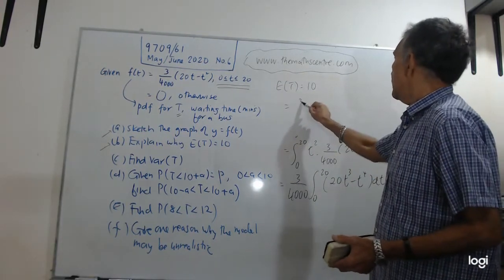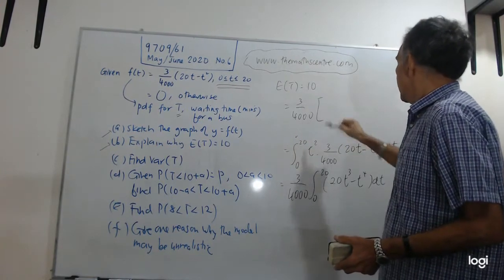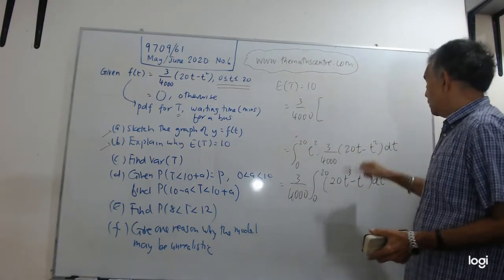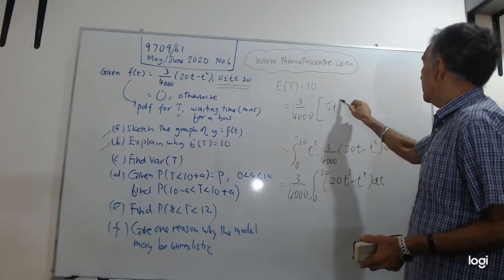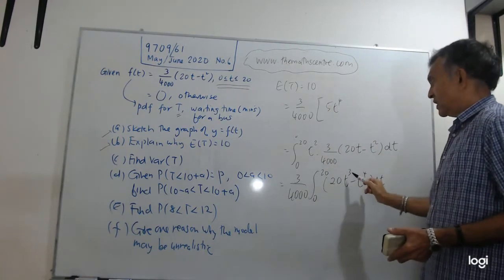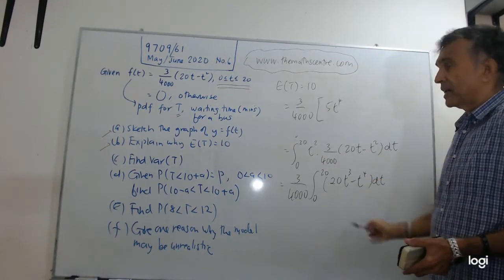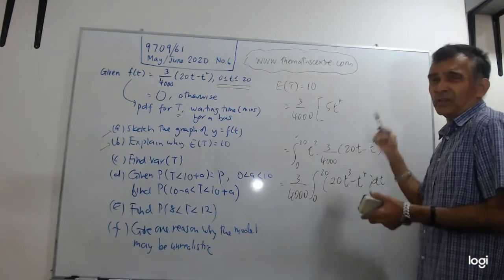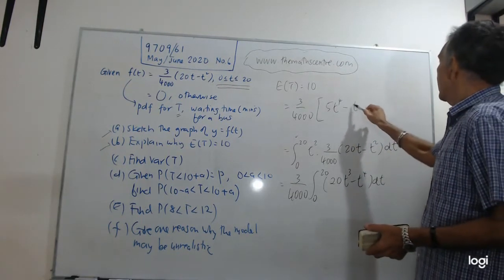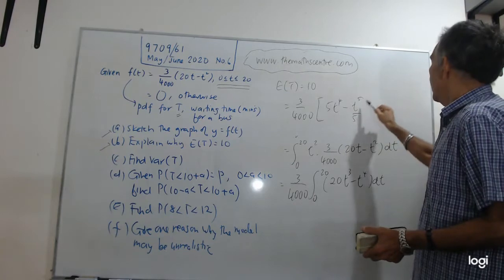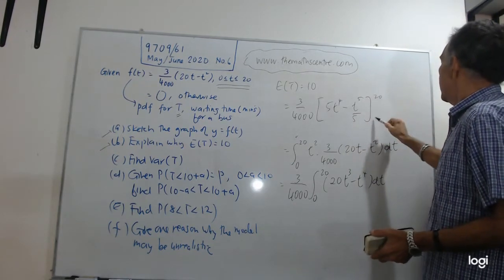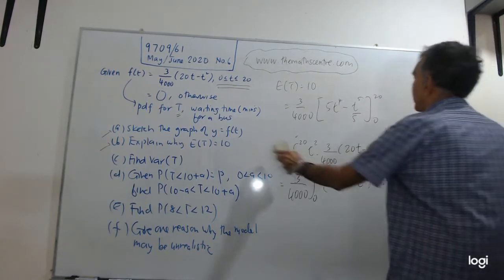Just raise the power by one, bring it down, then you have four and then you'll get this. And then this is t to the power of five over five, and 20 and zero. Let's just check: 20 t cubed integrate you'll get this, and then this is t to the power of five. Good, great.